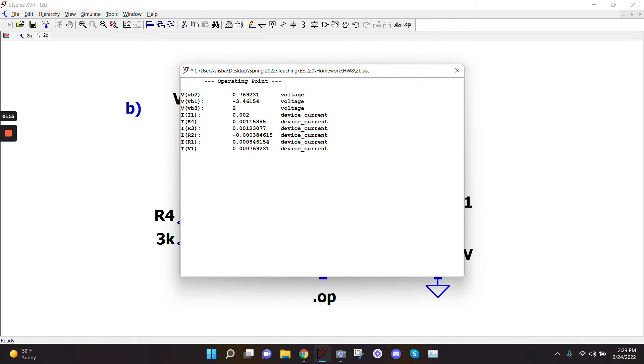And then I'll write down those voltages. So let me go ahead and write VB1 is negative 3.46 volts. VB2 is supposed to be 0.77 volts.